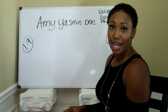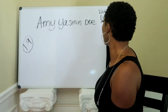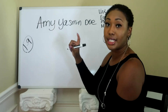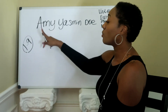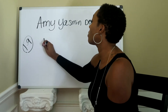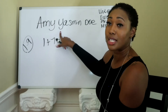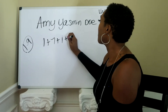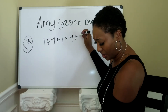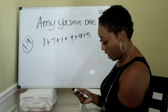Now last but not least, the soul urge or heart desire number, which would correspond to your Venus sign in your astrology chart. It is added up by the vowels in your name. In Amy, we have two vowels — A and Y, because that Y sounds like an E, so it counts as a vowel. The Y in Yasmin is a consonant, so we skip it. The vowels are: A is one, Y in Amy is seven, A in Yasmin is one, I is nine, O is six, and E is five.